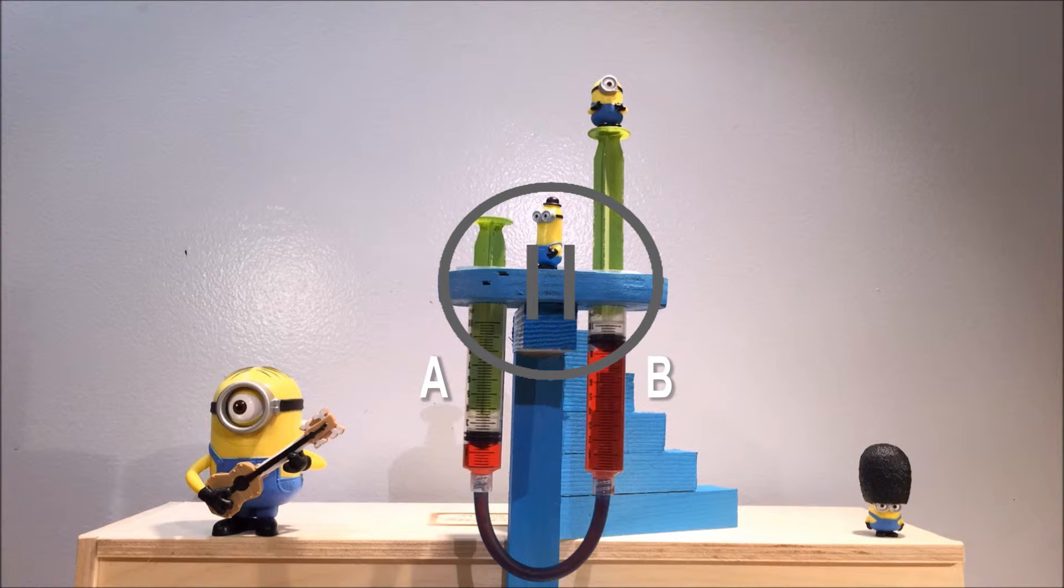Stewart's weight is pushing down on Piston B, which is pushing on the water, and because nothing is holding Piston A down, it raises up. Now what happens when Kevin jumps on top of Piston A?